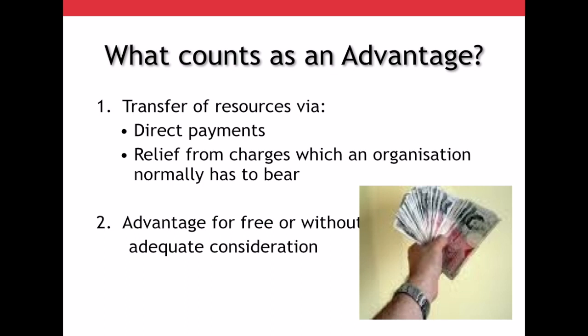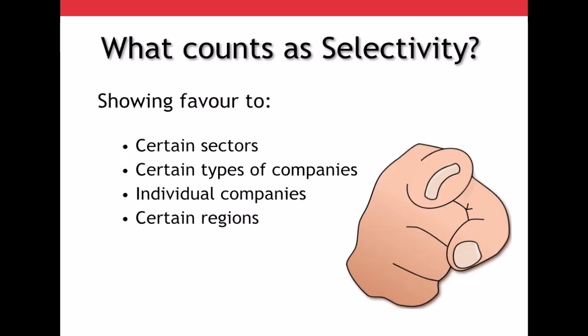Finally, it can also be an advantage which is given for free or without adequate consideration. So what counts as selectivity? This can be showing favour to certain sectors — for example, the mobile phone sector. It could be showing support to certain types of companies — for example, one manufacturer over another. This could be showing favour to individual companies; if you support one company over another, you're automatically providing them with an advantage. Even certain regions — a scheme which is Wales-wide would be considered selective because it doesn't cover England, Northern Ireland, and Scotland.